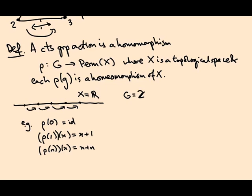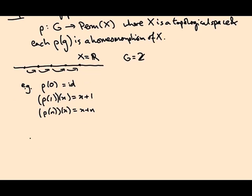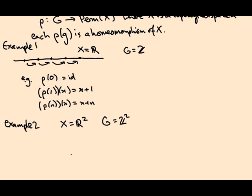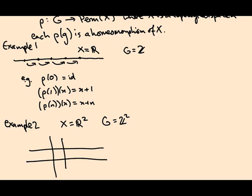Related example, one dimension up. This is going to be example two. You take the plane R². You take the group to be pairs of integers Z². And you act using integer translations in both directions. Now let me divide the plane up into little squares, one by one squares. I'll do it in red.